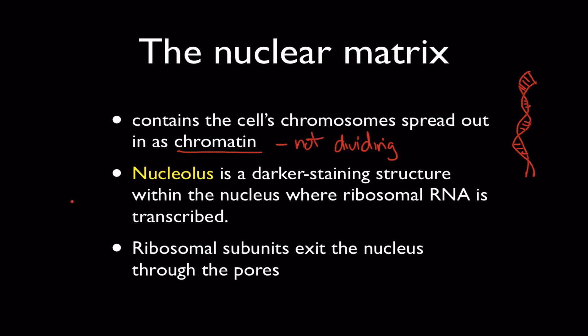Inside the nucleus, or the nuclear matrix, is a darker area called the nucleolus, which is where the ribosomes are being manufactured. Remember, ribosomes are built in subunits, which then leave the nucleus one by one through the pores.